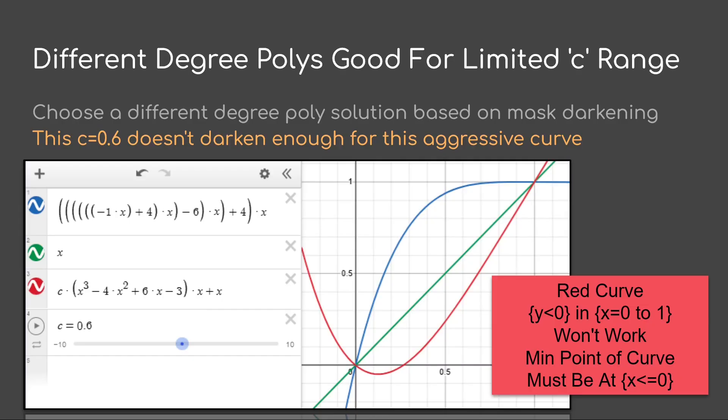You'll notice that different degree polynomials are good for only a limited c range. So based on the mask darkening amount, you'll have to choose a different polynomial.